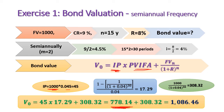So the present value of all 30 coupon payments promised over the next periods is worth 778 Egyptian pounds today, and the 1,000 face value to be received after 30 periods is worth 308 Egyptian pounds today. Therefore, bond value equals 778 plus 308, giving 1,086 Egyptian pounds. This bond is said to sell at a premium because bond value is greater than the face value of 1,000.